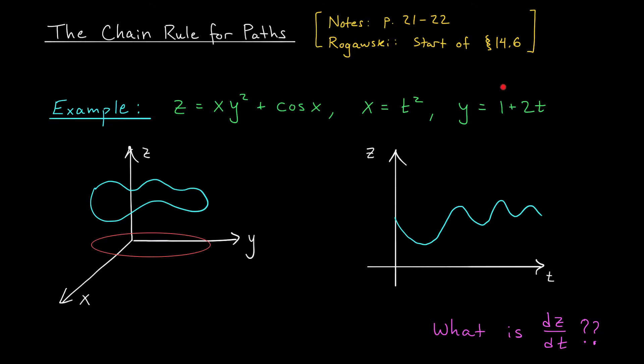As time passes, x and y change, and therefore so too does z. So if we choose to think of z as a function of just one variable, t, then we can plot the relationship between these two quantities in a 2D plane, just like you did back in calc 1. And now we can ask the usual questions from calc 1. In particular, we can ask, what's the derivative of z with respect to time?